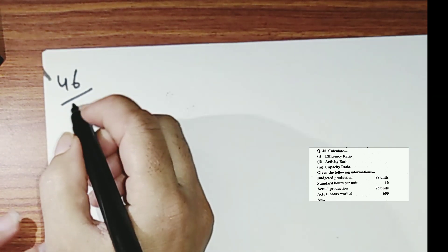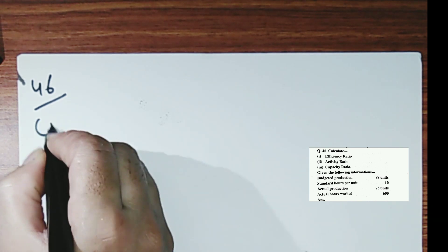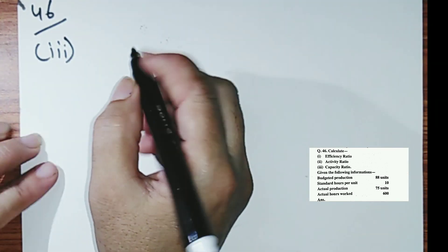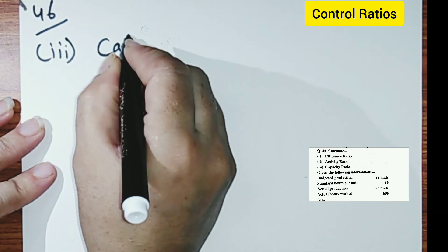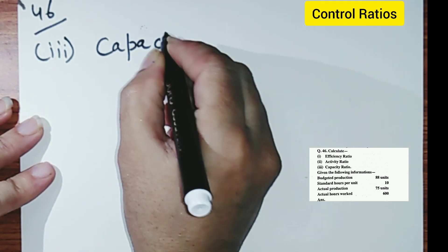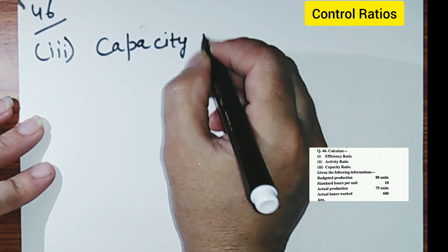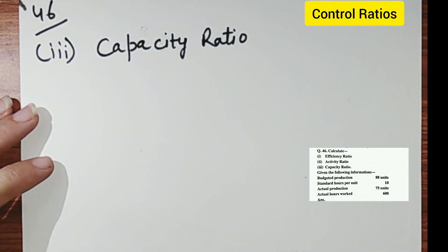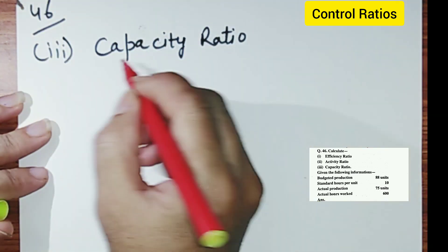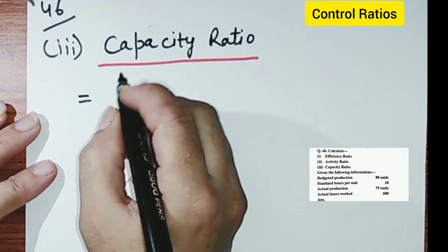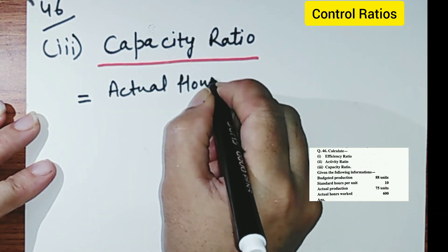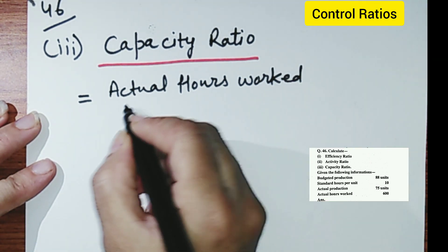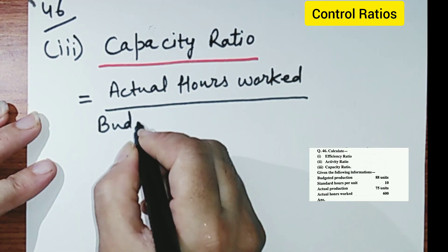Next is the third part, that is the capacity ratio. Capacity ratio is equal to actual hours worked, upon budgeted working hours, multiplied by 100.